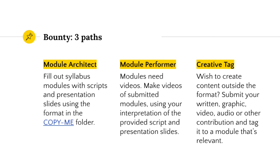There are three ways to get paid in the Blockchain Education Month. You can build out the course, you can make YouTube videos for the course, or you can create content completely unrelated to the format we've outlined — what we like to call creative tagging. The creative tag is a little tricky because the whole point is that it's subjective. We're trying to make it so people can create content that still applies to the outline, while not being within the format we already designed, such as the slides or the script.